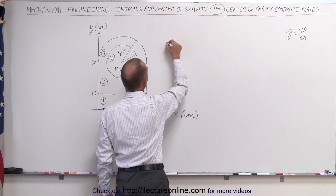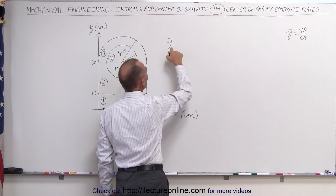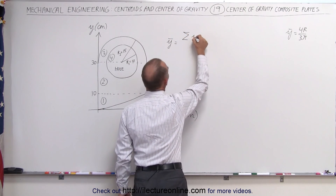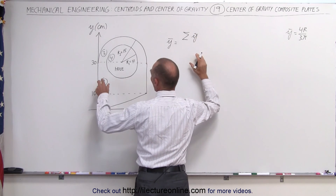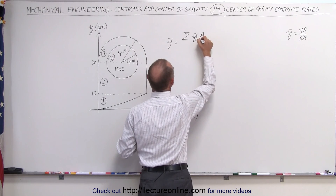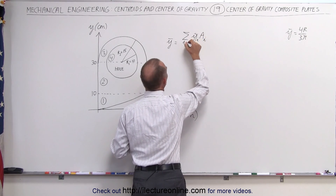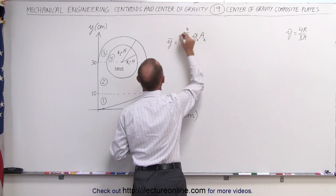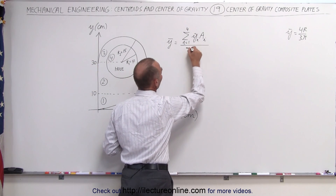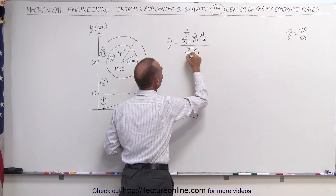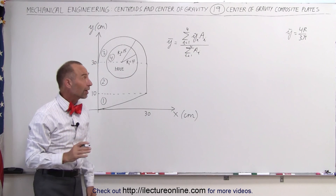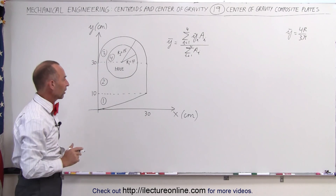Let's start with the y-direction. The y-coordinate of the center of mass is equal to the sum of the y-coordinate of the center of mass of each individual piece, multiplied by the area of each individual piece. We sum those from i equals one to four, because there are four sections, then divide by the sum of all the areas. We'll then do the same for the x-direction.